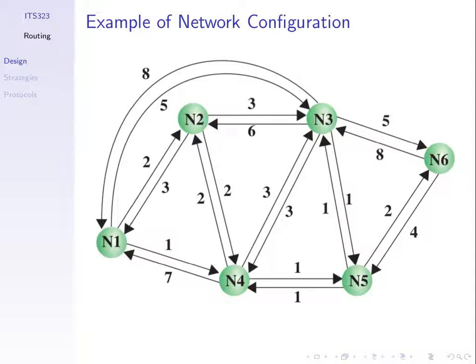The algorithm should be simple — easy to implement and execute, since computers do this for us rather than humans. It should also be robust: when things go wrong it should still work. If the best path from 1 to 6 is 1-4-5-6, but then link costs change or a link fails, the algorithm should adapt and find another path to node 6.